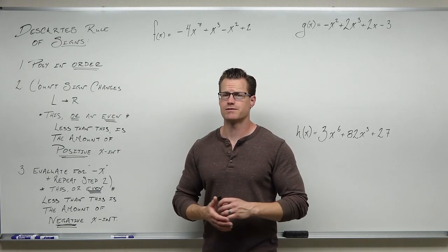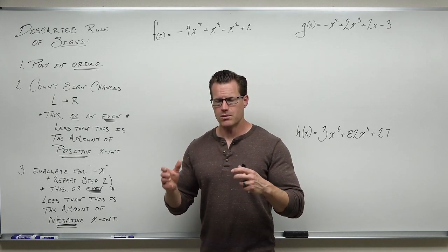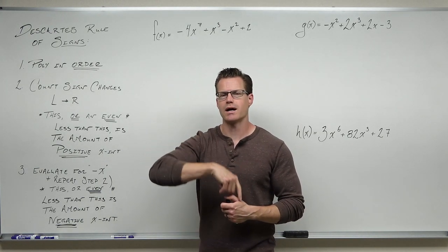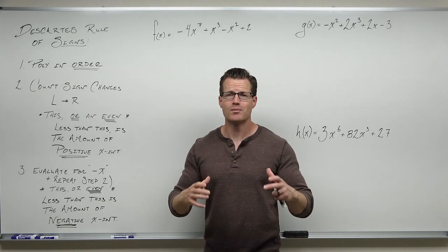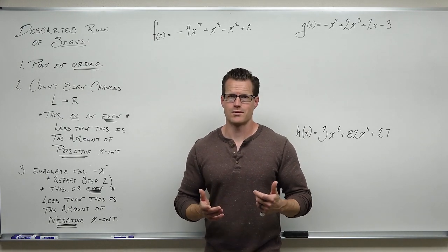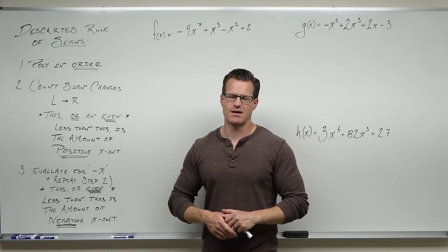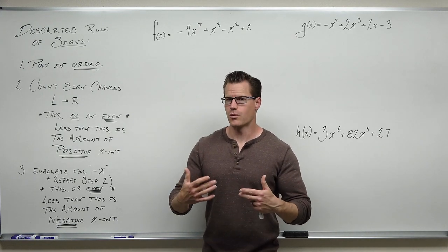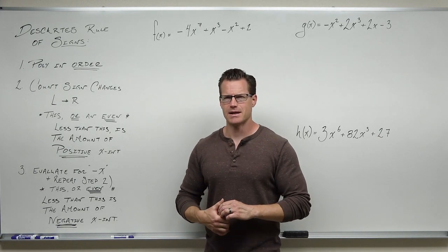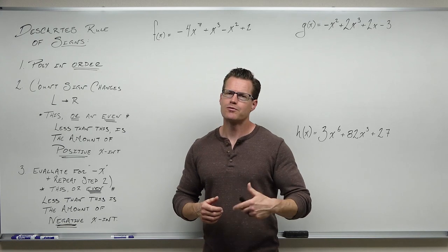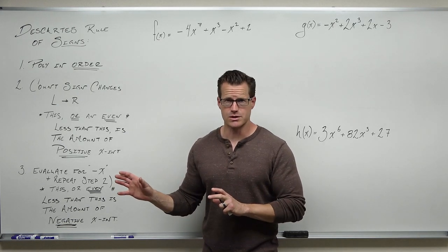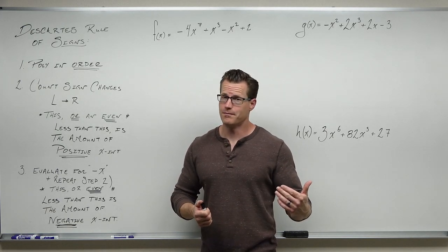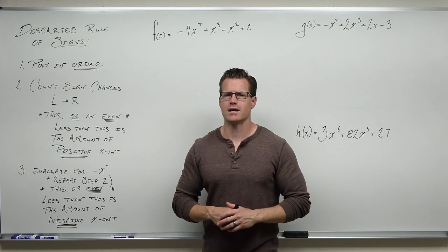Here's what you're going to learn in this video: if you have a polynomial in order and you count the number of sign changes from left to right, it will tell you the number of positive x-intercepts you have. It's going to tell you either three or one, or maybe six or four or two or zero. It's powerful when you start combining it with the rational zeros theorem — when you start finding zeros, it'll tell you how many are left, or maybe it'll tell you there are no positives or no negatives.